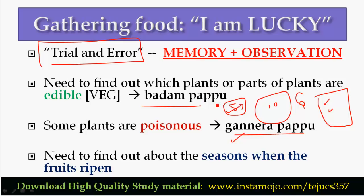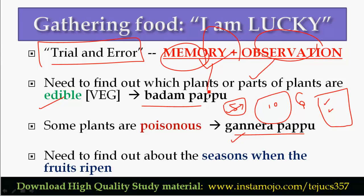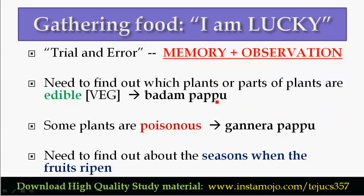In the forest, the trees and their edible parts were learned through memory and observation. Through observation, knowledge fed into memory and was passed on. The key challenge was identifying which is the edible part of a plant and which is the poisonous part. The first challenge is that fruits ripen only in a season.